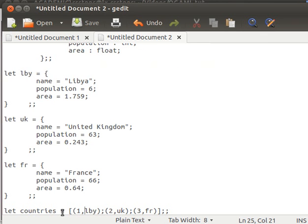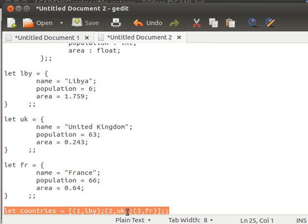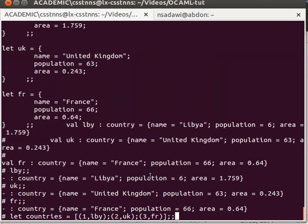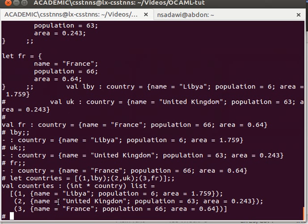Now here I have a small list of pairs, tuples of two. Let countries equals a list of pairs: one comma LBY, that's the first pair; the second pair is two and UK; the third pair is three and FR. Copy and paste that, and that's the contents of our list. Now integer and the record, integer and the record, integer and the record. These are three elements.